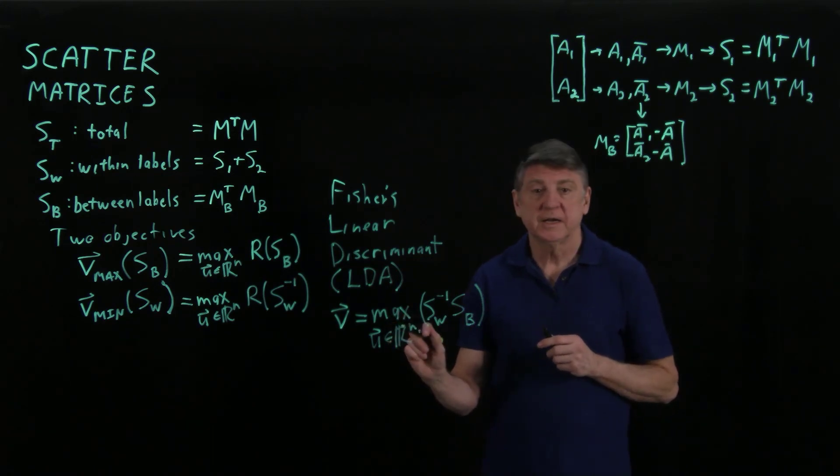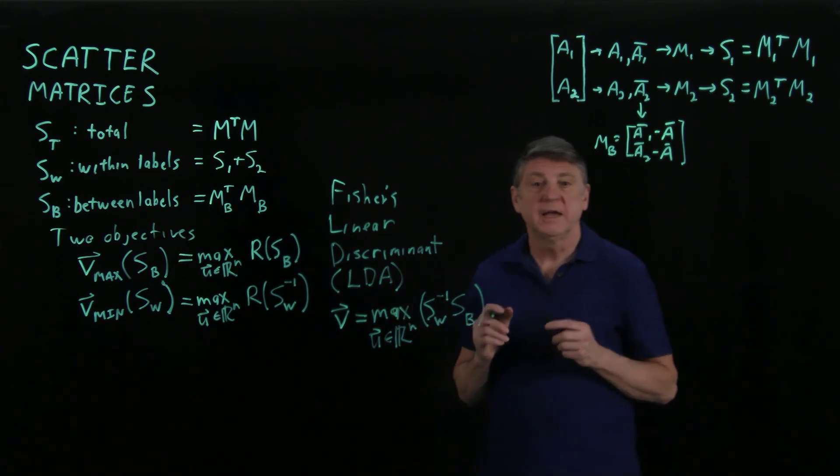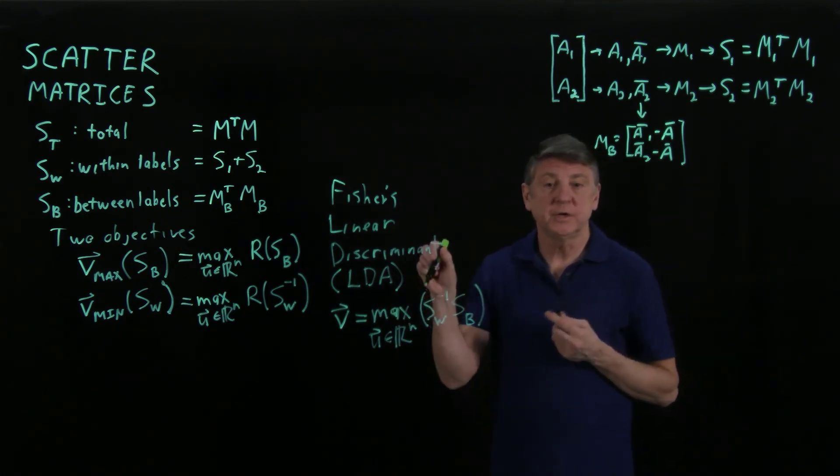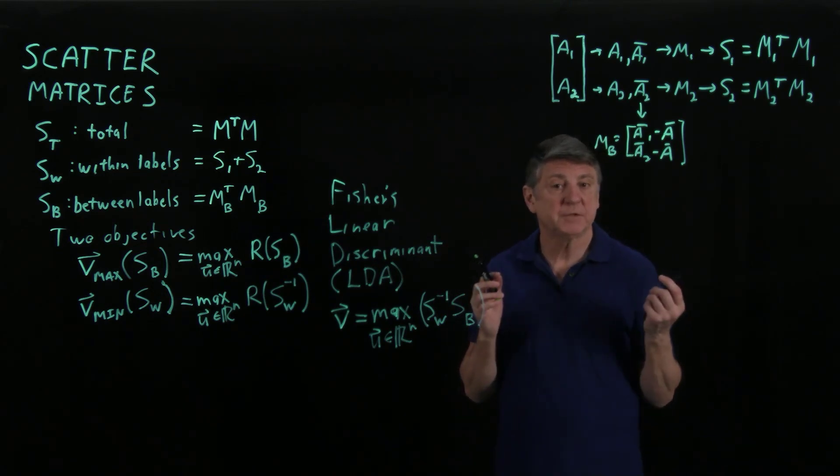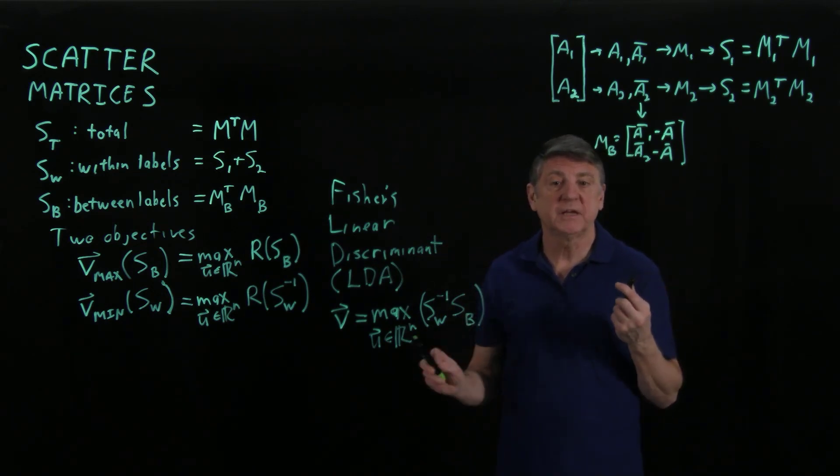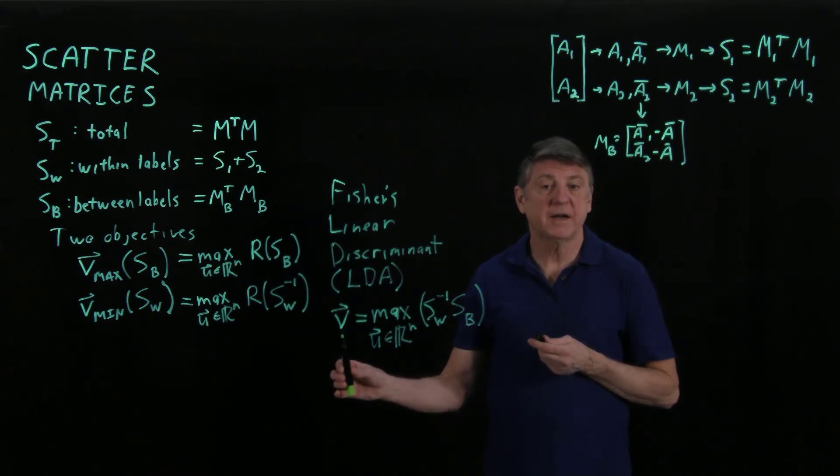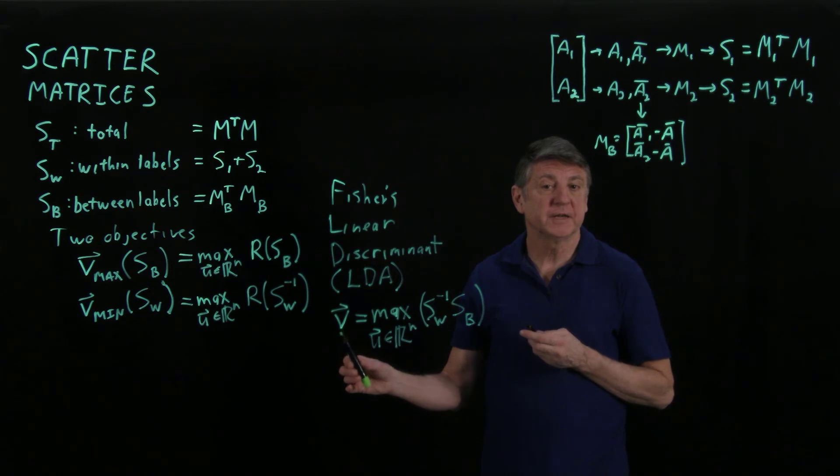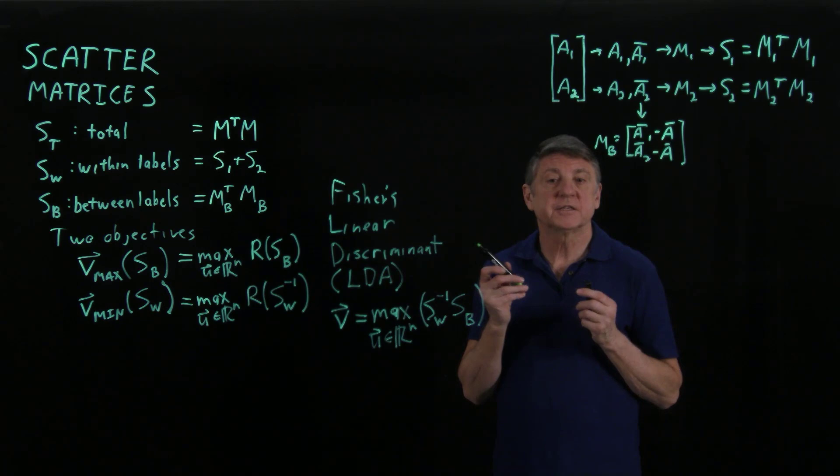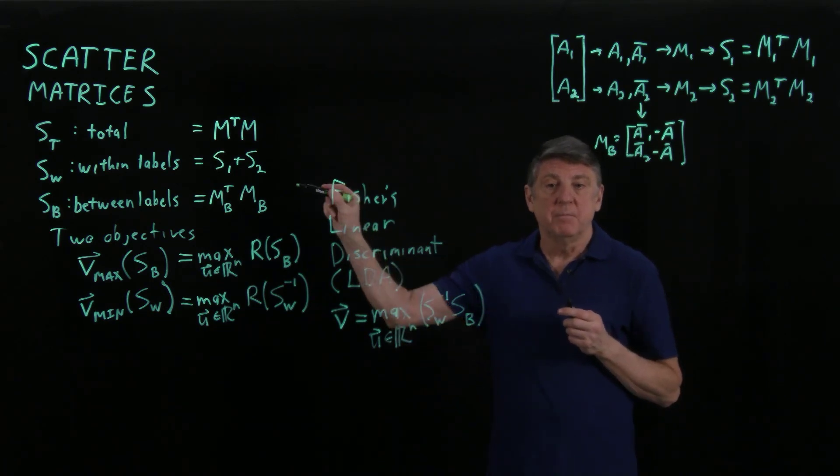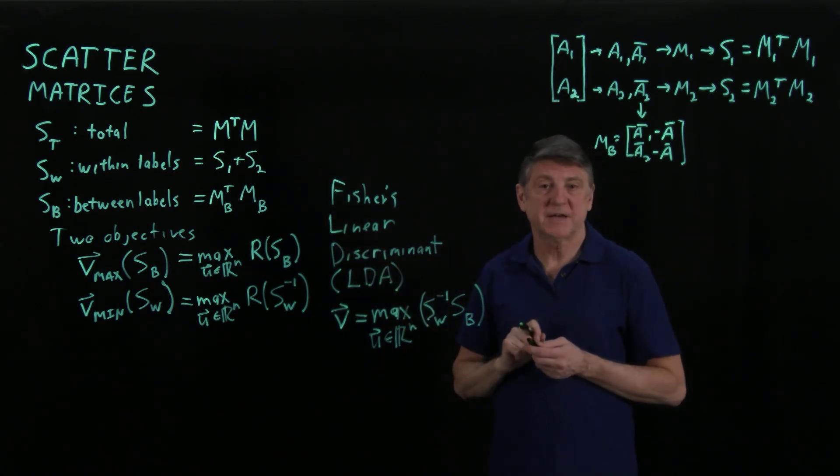So this problem of finding the maximum eigenvalue, all we need to do is compute this matrix, and then we can use MATLAB's eig function, and it will give us the maximum eigenvalue and maximum eigenvector. And that maximum eigenvector is Fisher's linear discriminant, and that is the direction in your data that simultaneously maximizes the between label scatter and minimizes the within label scatter.